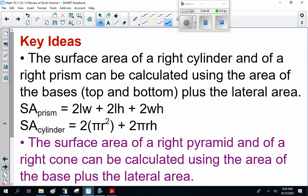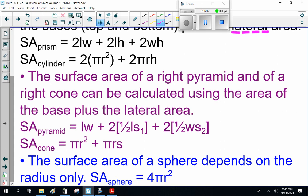Now, key ideas. The surface area of a right cylinder and of a right prism can be calculated using the area of the base, top and bottom, plus the side area, plus the lateral or side area. Be careful, I'm going to throw that word at you occasionally, lateral.